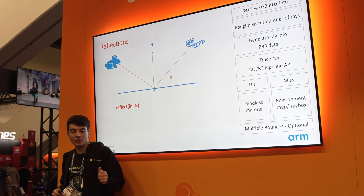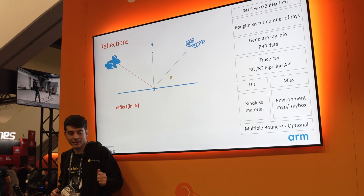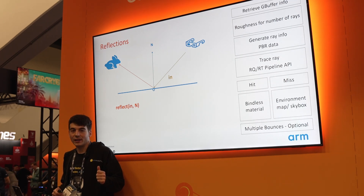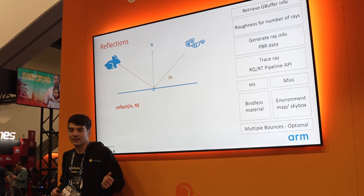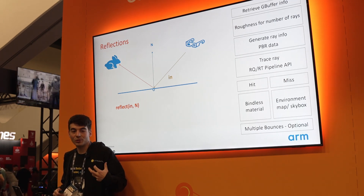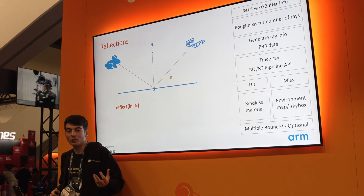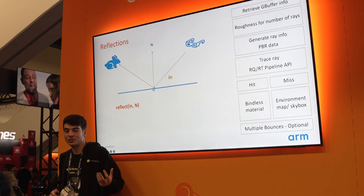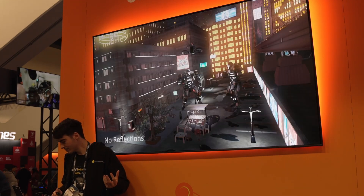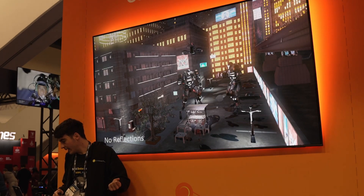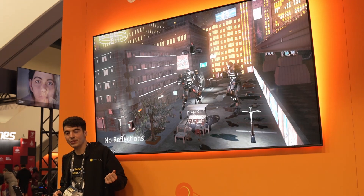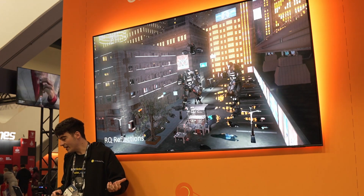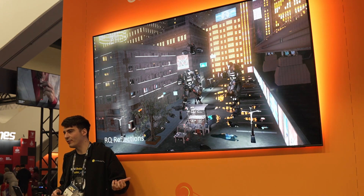We can actually implement recursion in our pipeline — we just launch multiple rays to get a reflection of a reflection. Also, if we have glossy reflections, we will probably need some kind of denoising step to smooth the result. Here you can see the scene without any kind of reflections, and here you can see it with ray-traced reflections enabled.